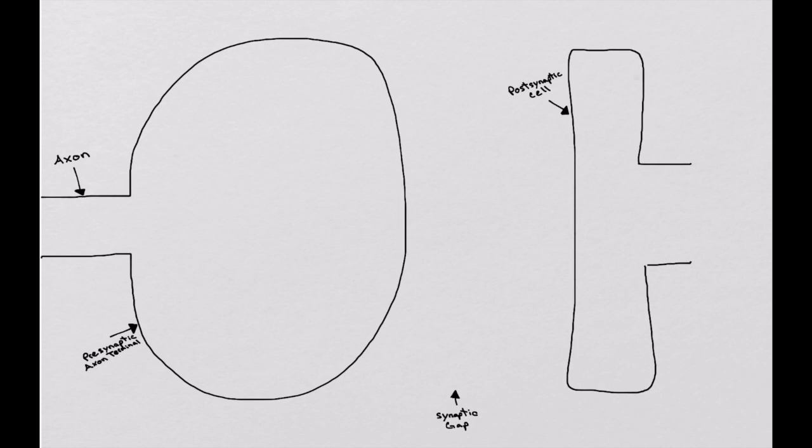As we talk about the adrenergic synapse, we'll discuss the basic components that make a functional synapse. Here we have an axon which leads into the presynaptic axon terminal, this big circle here on the left.